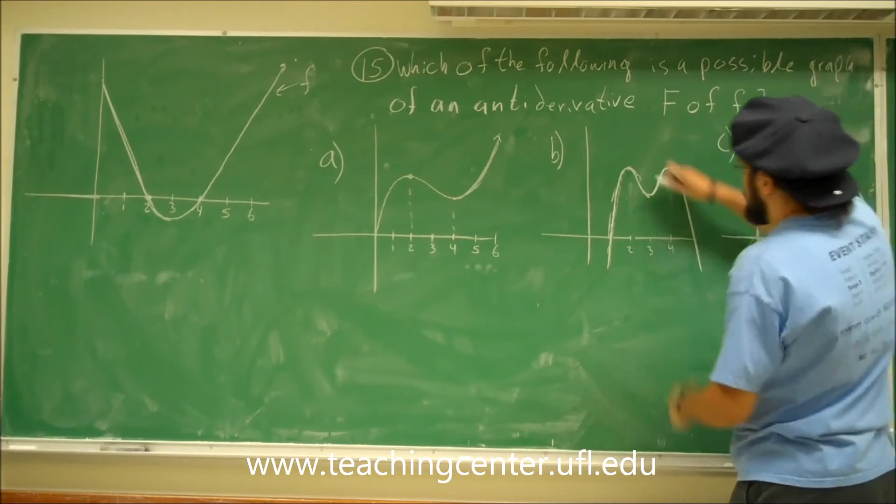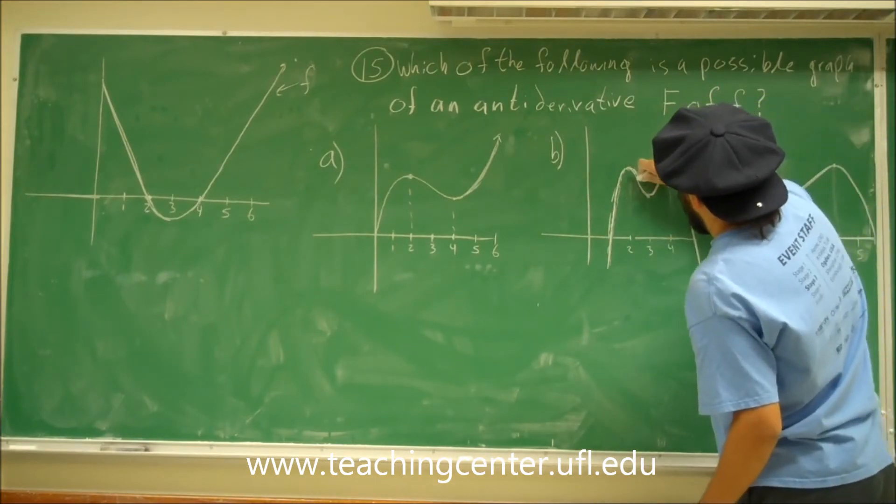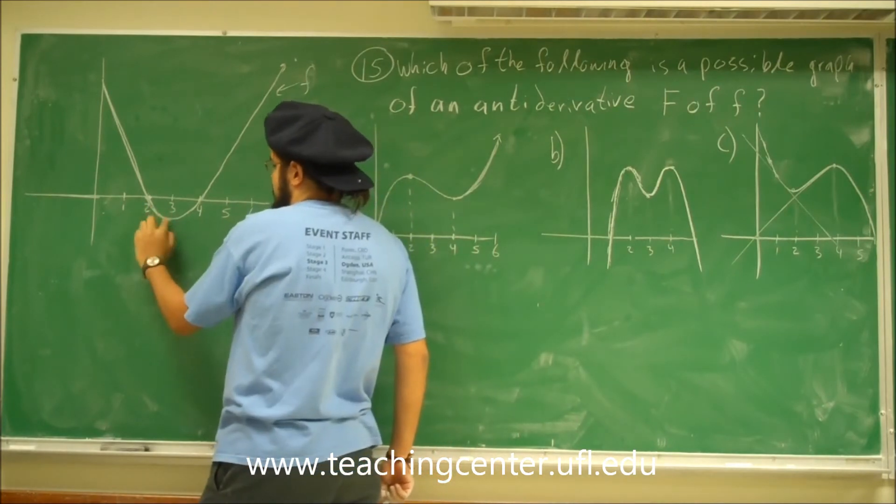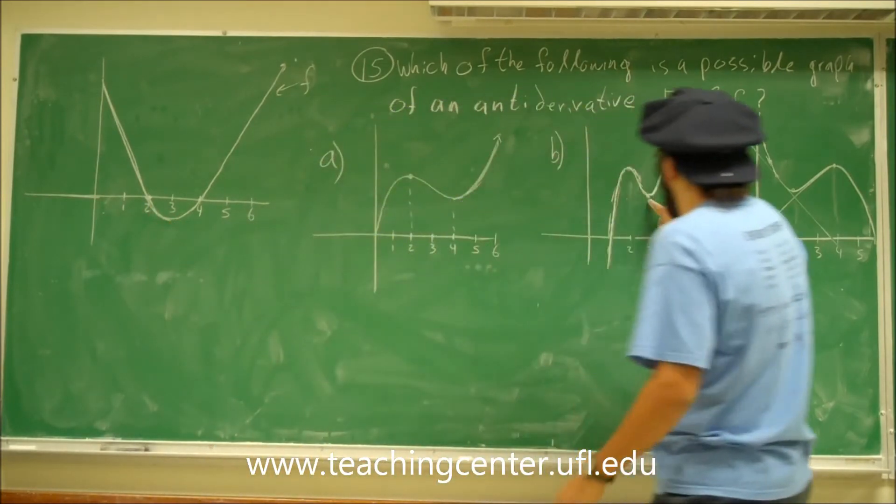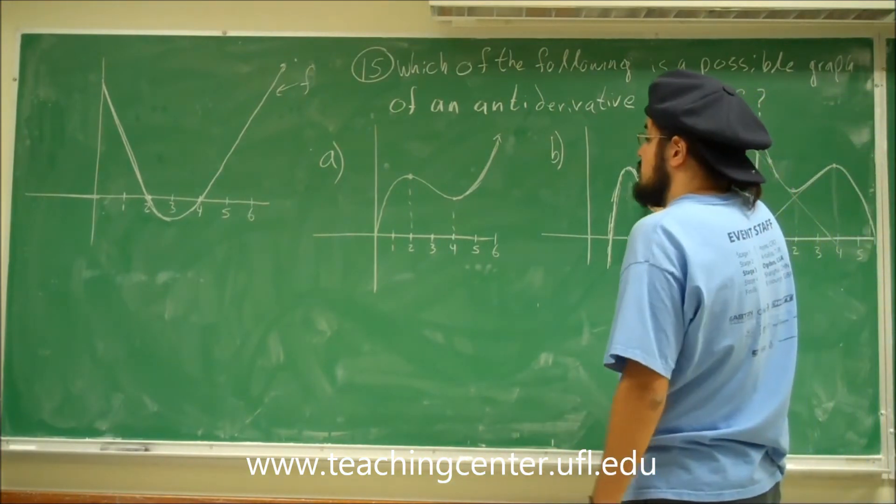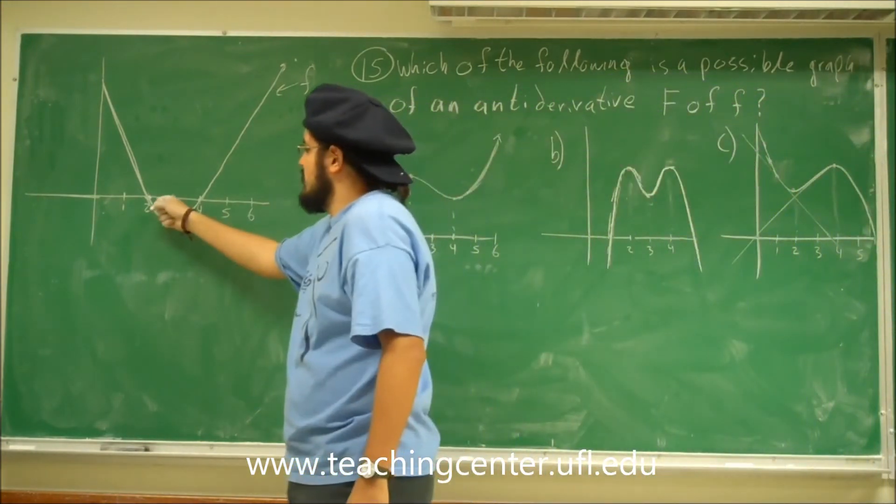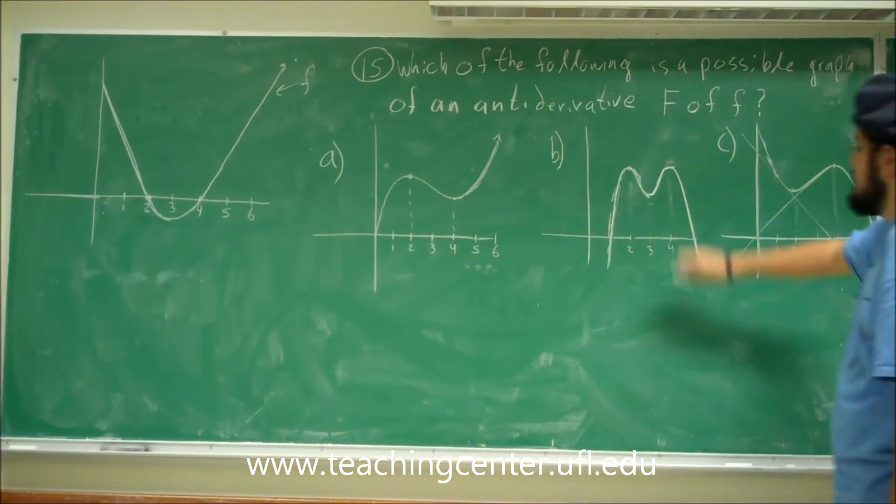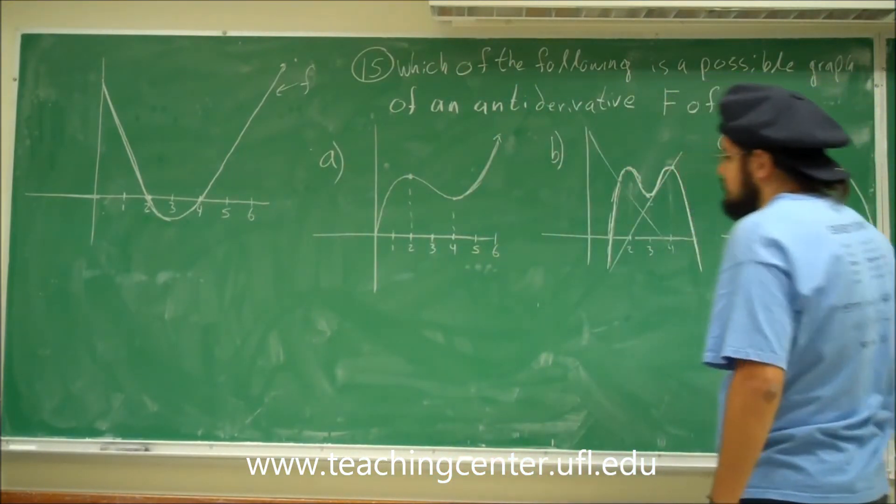However, now, let's see, it's decreasing from two to three. So negative slopes, and that's fine. From two to three, we have negative values. That's good. Then there is an extrema at three. Okay, there's no extrema at three here, because it does not cross the zero there. So right off the bat, this one is not it either.